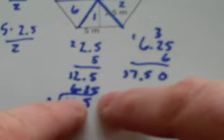But now I need to take that answer and divide by two. Twelve and a half divided by two is six and a quarter.